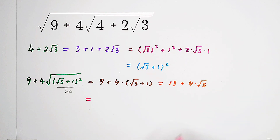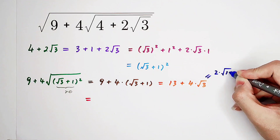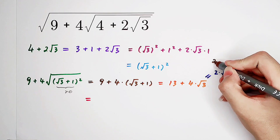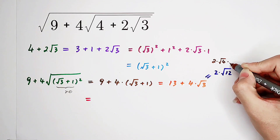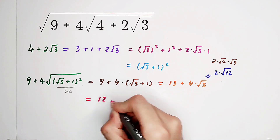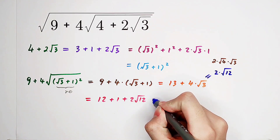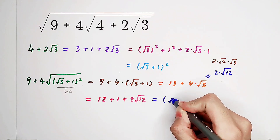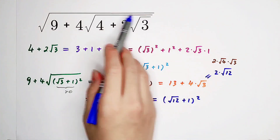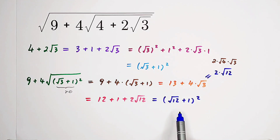4 times square root of 3 can actually be written as 2 times square root of 12, because it is 2 times square root of 4 times square root of 3, and 4 times 3 is 12. Here, 13 can be written as 12 plus 1, plus 1 plus 2 times square root of 12. And this one is square root of 12 plus 1, all squared.